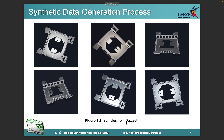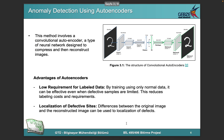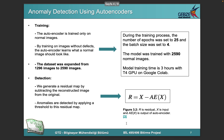In this project, an autoencoder anomaly detection model was developed using a synthetic dataset. The autoencoder is trained on normal images and it learns what a normal image should look like. For the detection part,